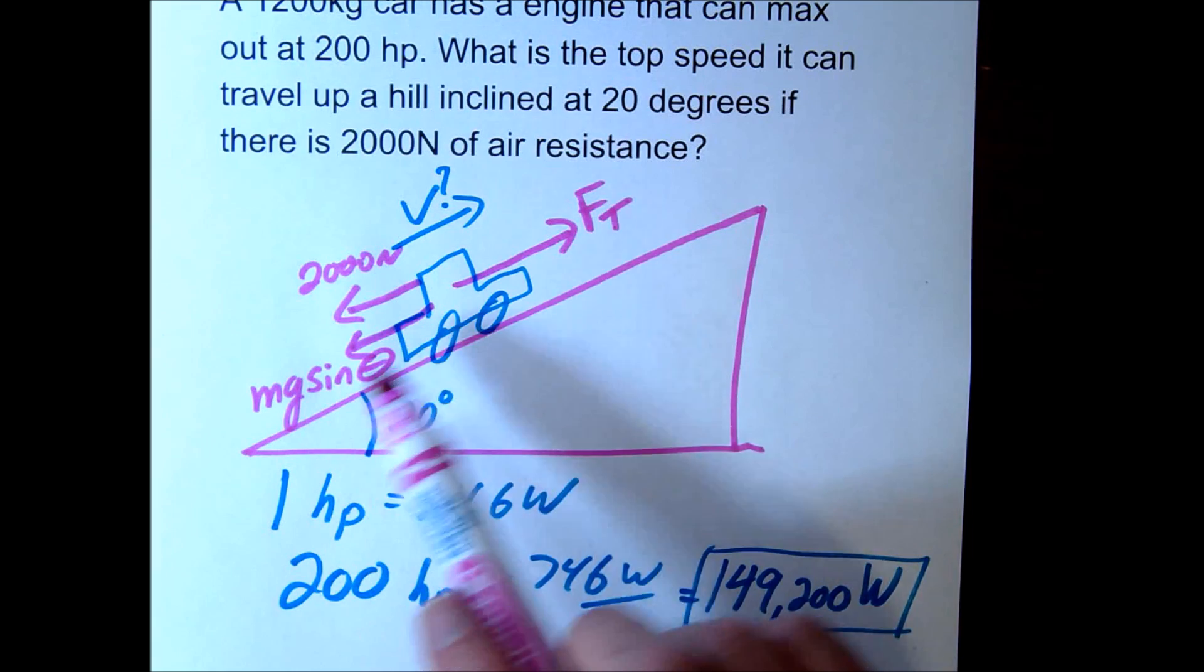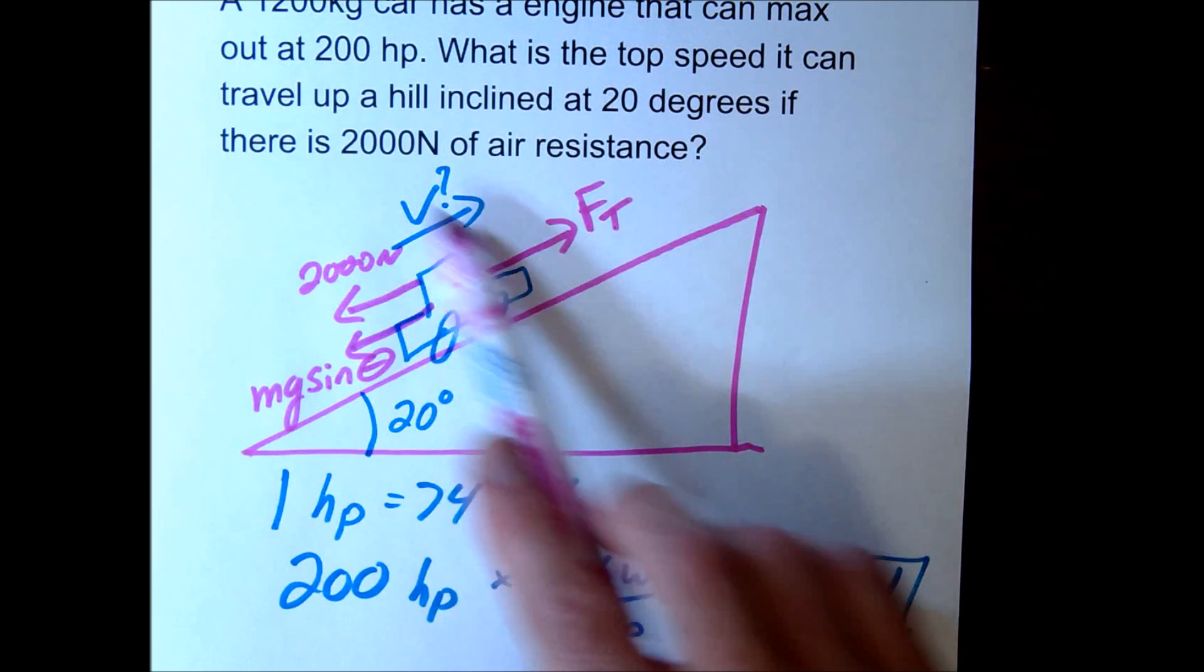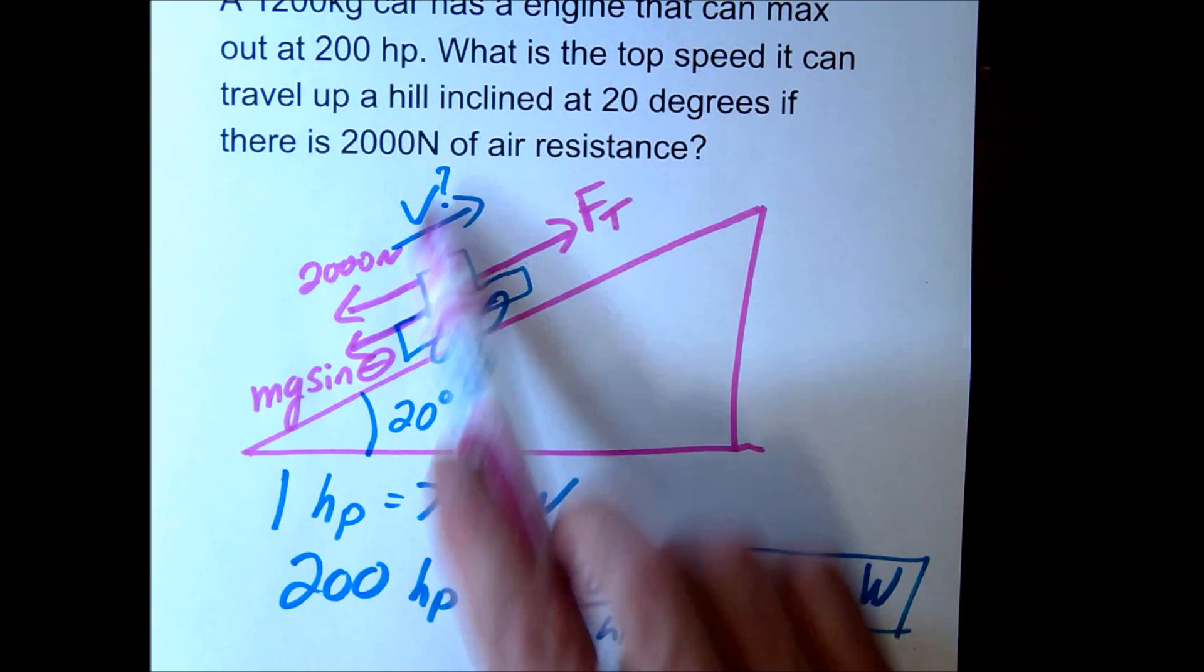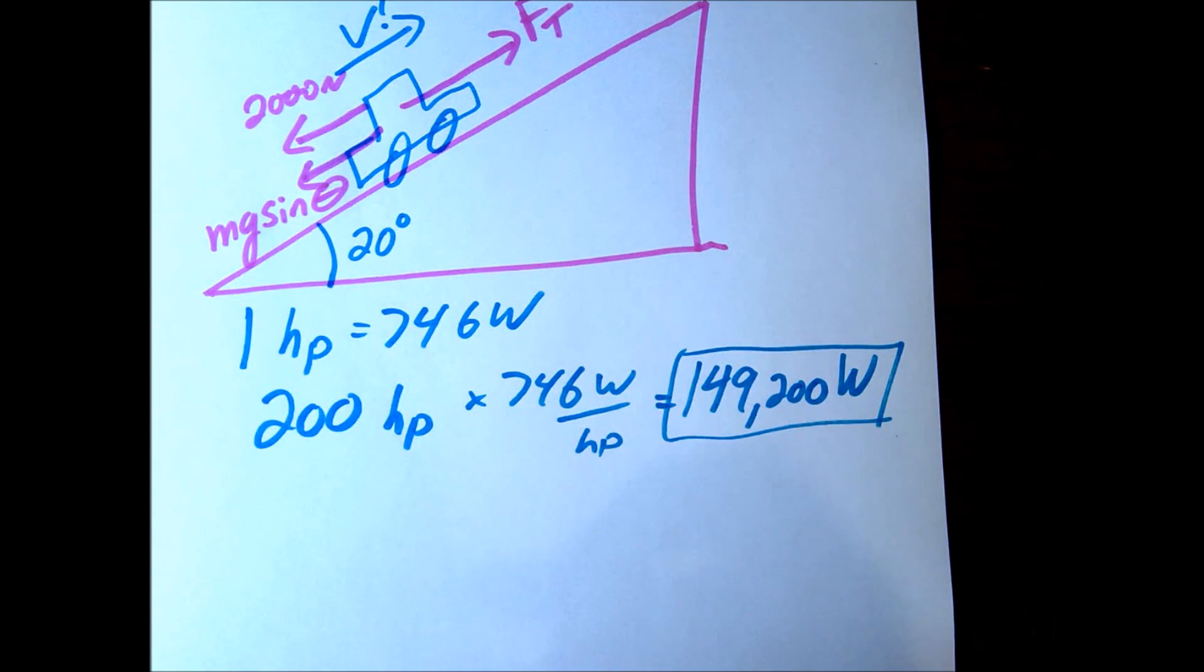Alright? So we're going to be moving up this hill and we're reaching our top speed. So that means it's going to now be moving at a constant velocity at that point. So let's go ahead and calculate this out.